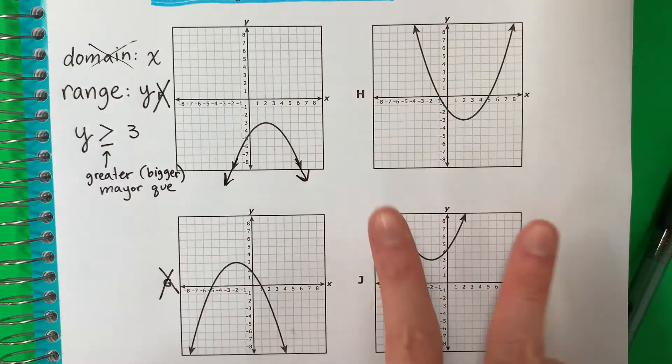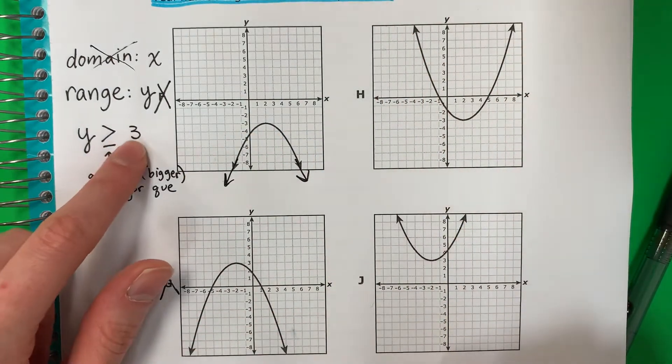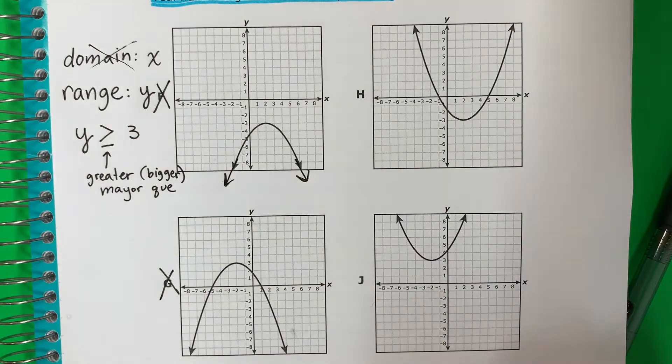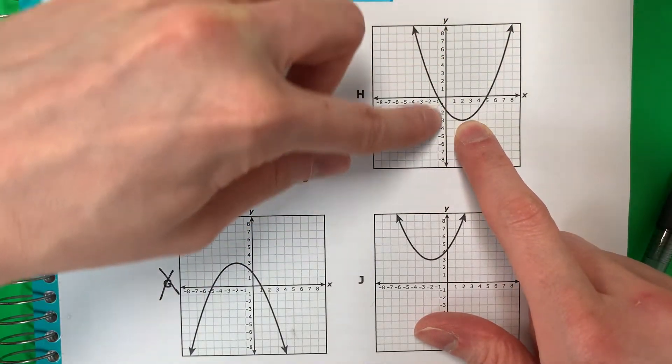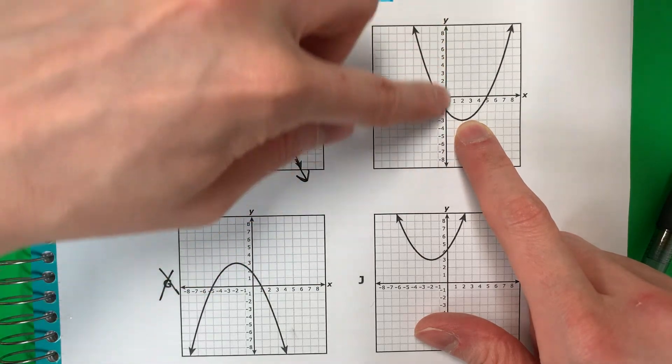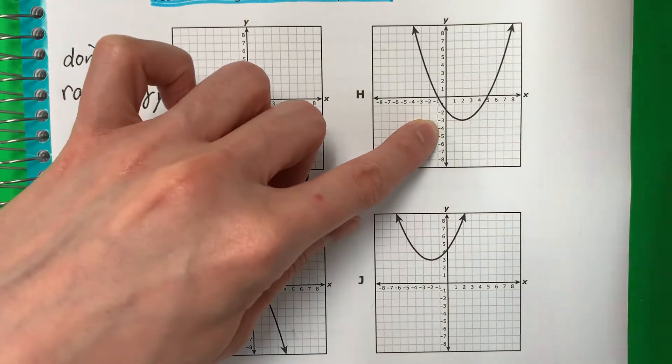Okay, so these are big numbers, big numbers. Números mayores, números mayores. Okay, and I want three or bigger. Okay, so take a look here. What's the smallest number on the y? ¿Cuál es el número menor aquí en la y? Which number is the smallest here on the y? It looks like negative three.